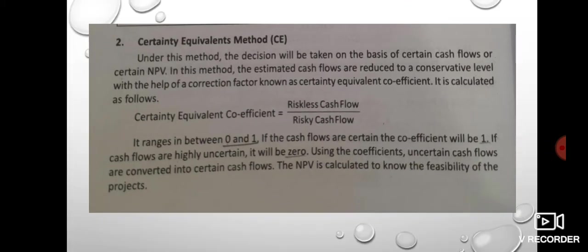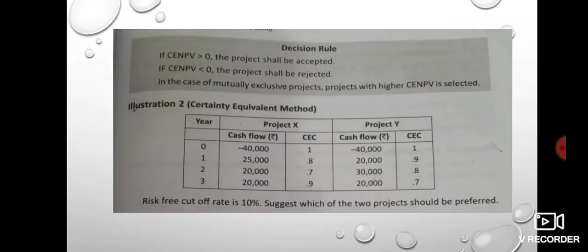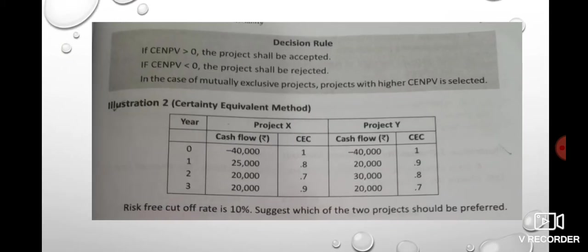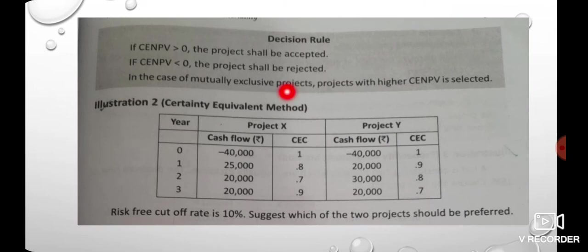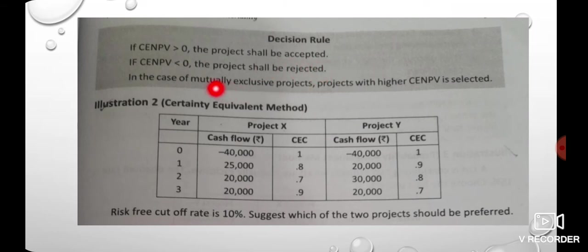NPV is calculated to know the feasibility of the project. In the decision rule, we will accept the project if NPV is greater than or equal to zero. Now we have a question on the certainty equivalent method.